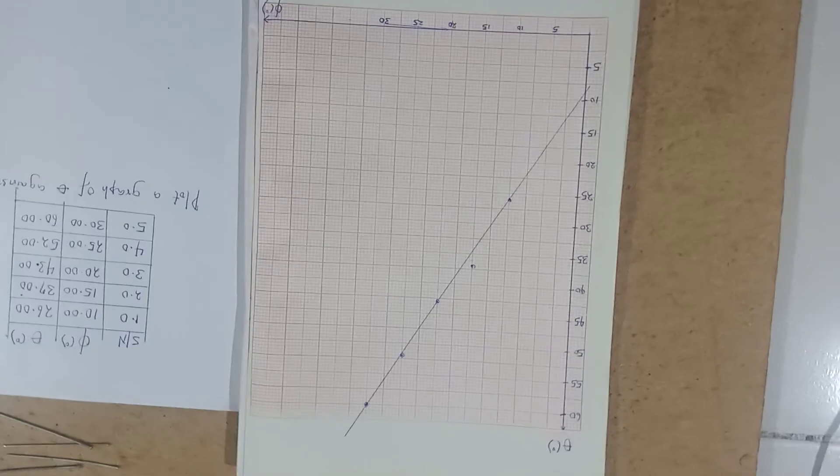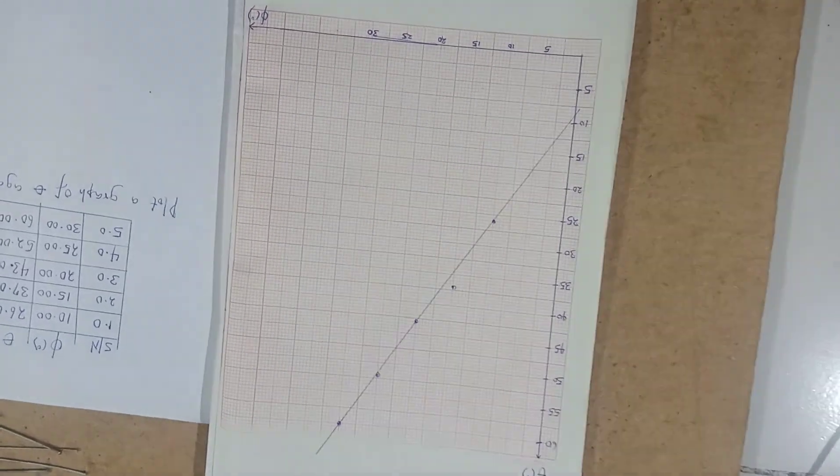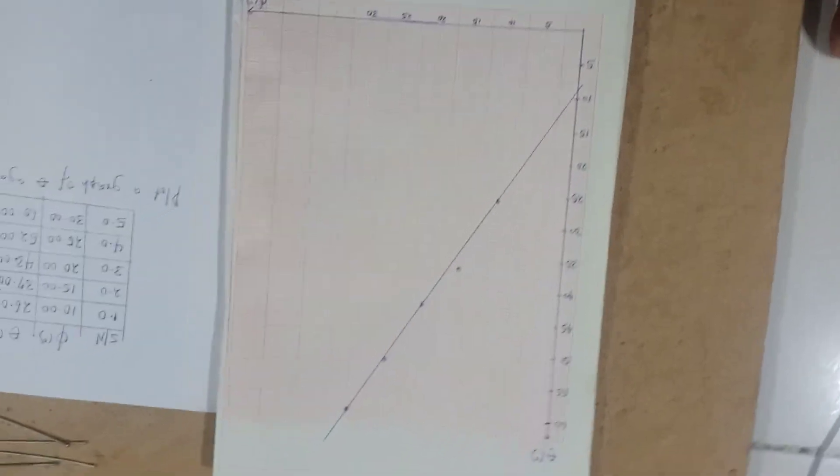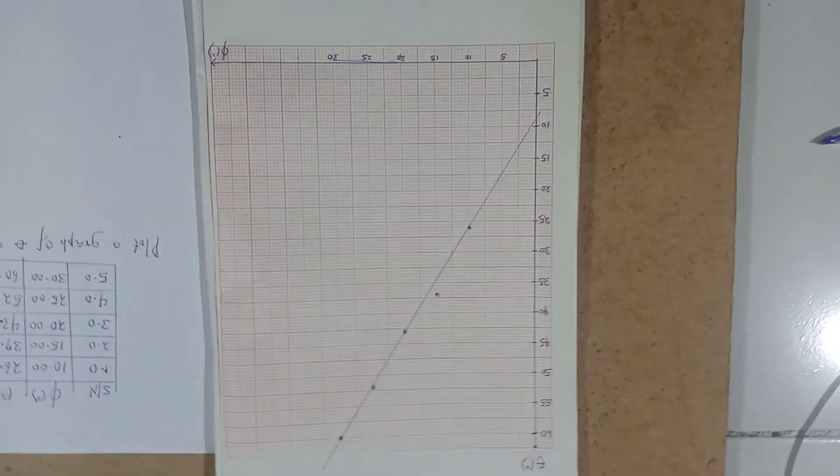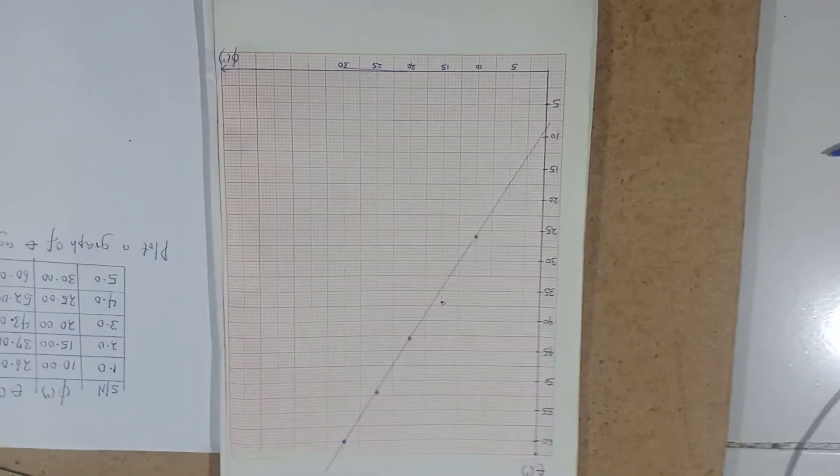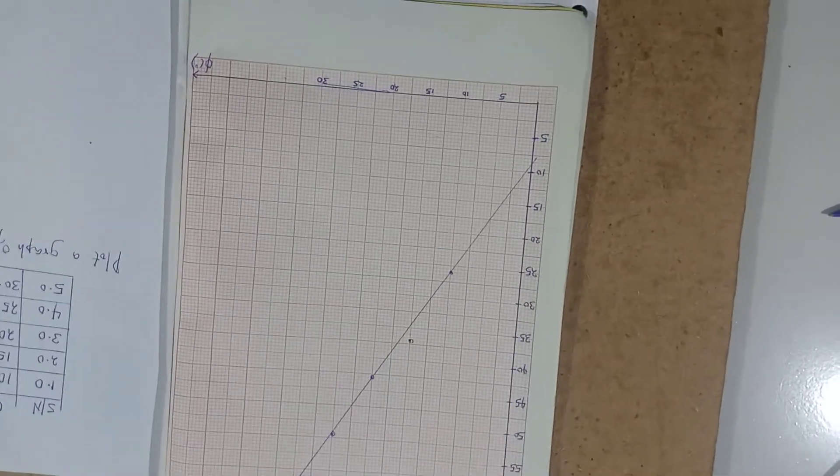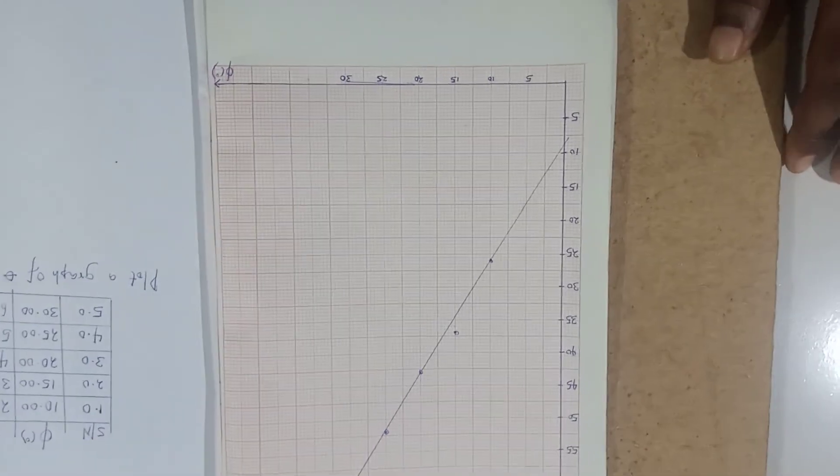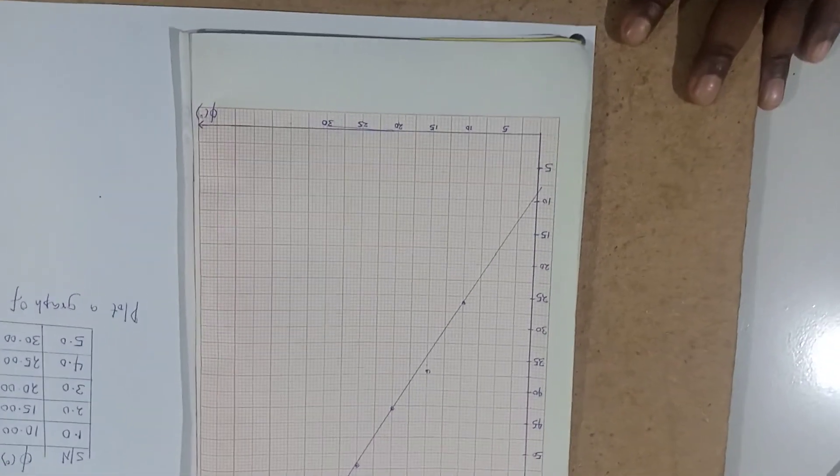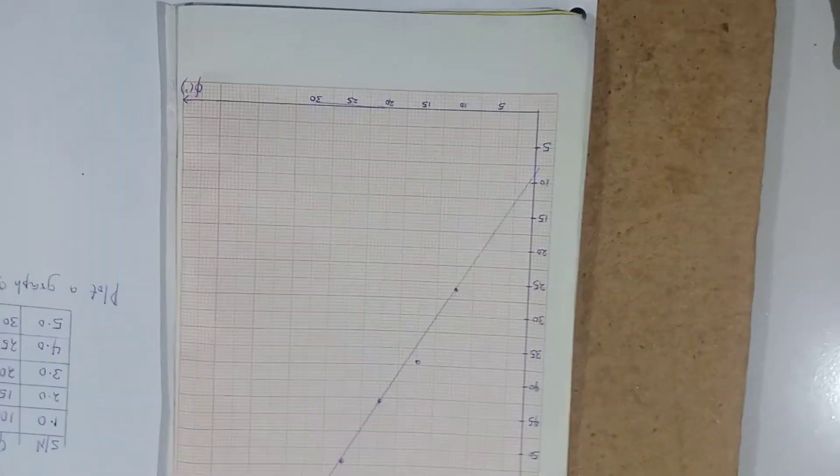So this is a summary of the graph. It's a straight line graph. You could see that almost all the points entered through. Hence, you'll be expected to state the law of reflection. You should be also expected to state applications of plane mirrors.